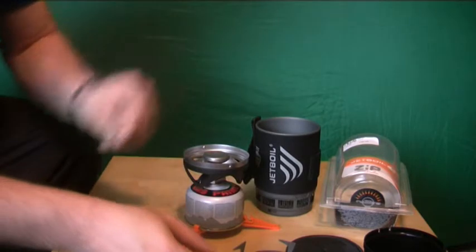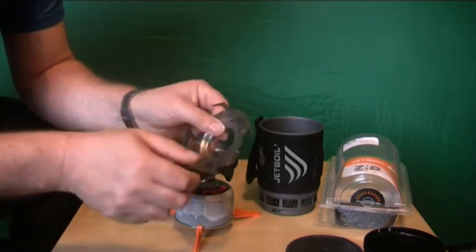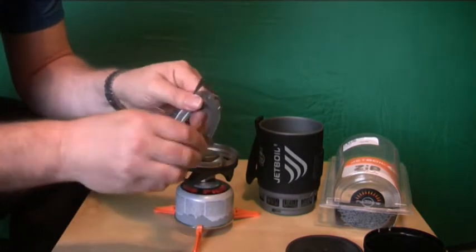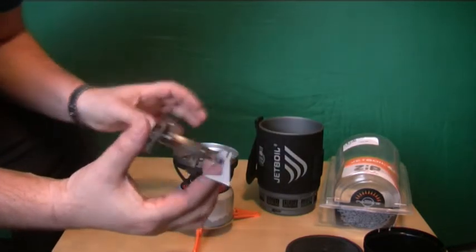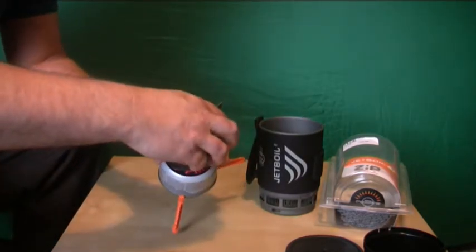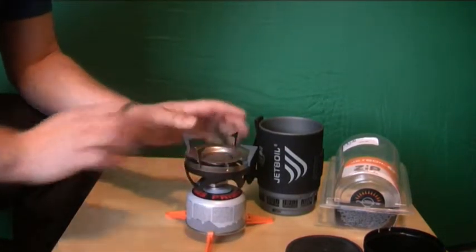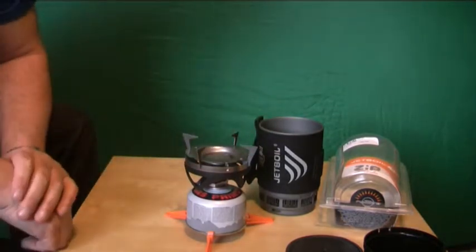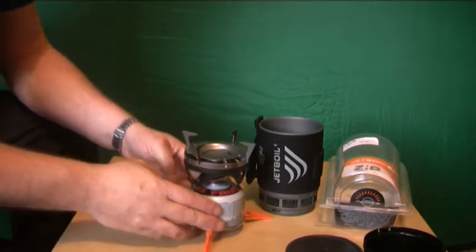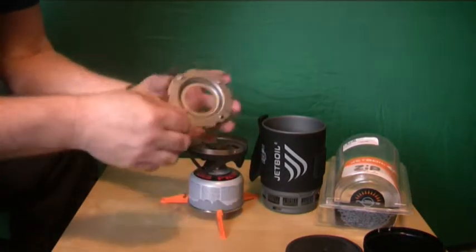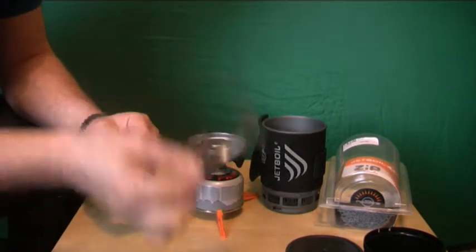If you're going to use a normal frying pan or kettle on this, that's where this piece comes in. You unfold these, and these little cutouts sit on the rim, giving you a nice stable platform for a bigger pan or frying pan. So you can use normal cooking pots on the system. If you're not going to take a normal pot, leave that at home and save yourself some weight.